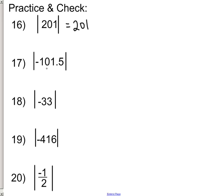What's the absolute value of negative 101.5? Negative, I'm sorry. It's not going to be negative. It's a positive 101.5. Because we're just measuring the distance from 0.